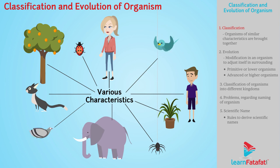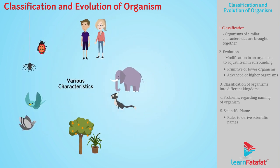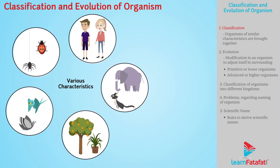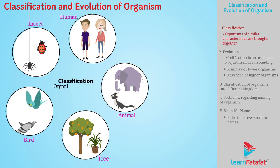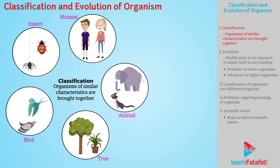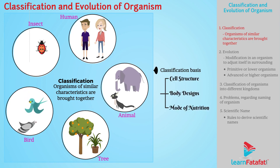Such characteristics help in classification of organisms. Classification is a technique in which organisms of similar characteristics are brought together. Classification can be done on the basis of cell structure, body designs, and mode of nutrition.